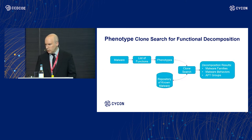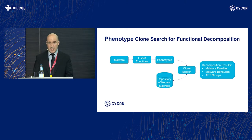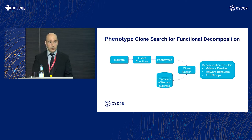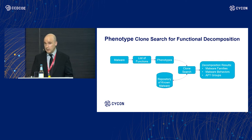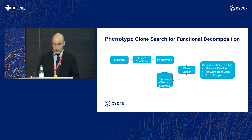This is how phenotype clone search works: given a malware to analyze, we extract all its functions, and for each function we extract all its phenotypes. We then try to match these phenotypes with phenotypes of functions contained in a repository of known malware. We repeat this process for all the functions of the malware, and at the end we aggregate all the results. This gives us the malware family to which the malware sample belongs, and can also tell us the behaviors of the malware and the APT group to which it belongs.